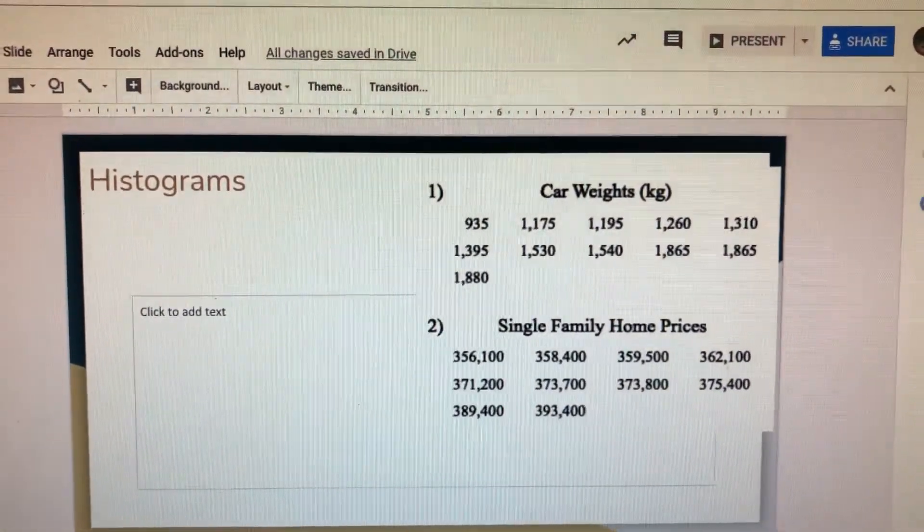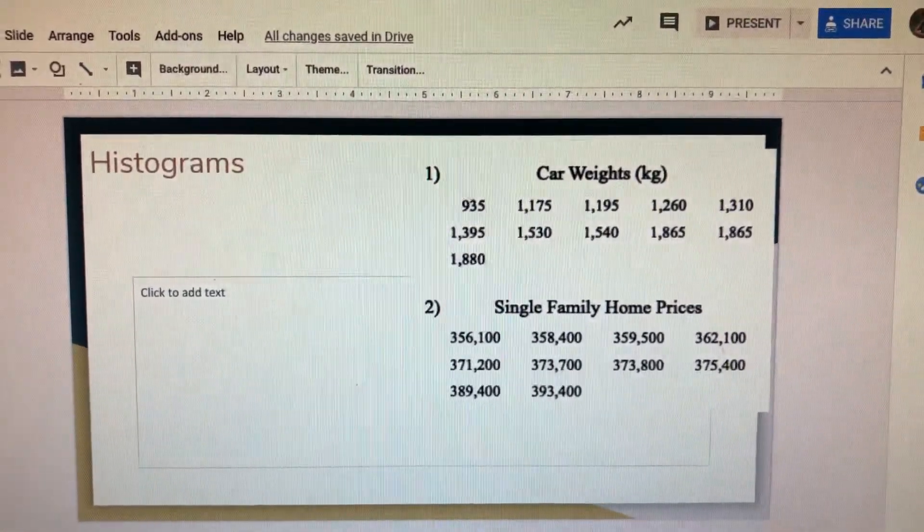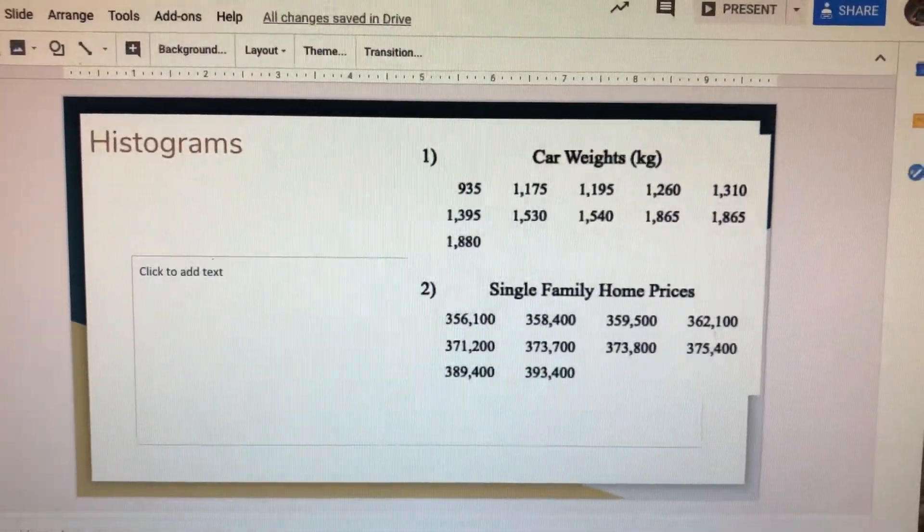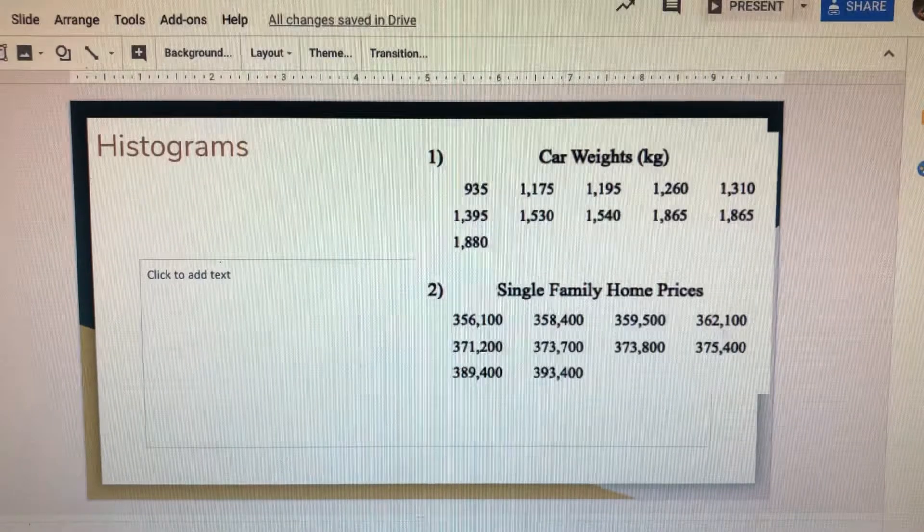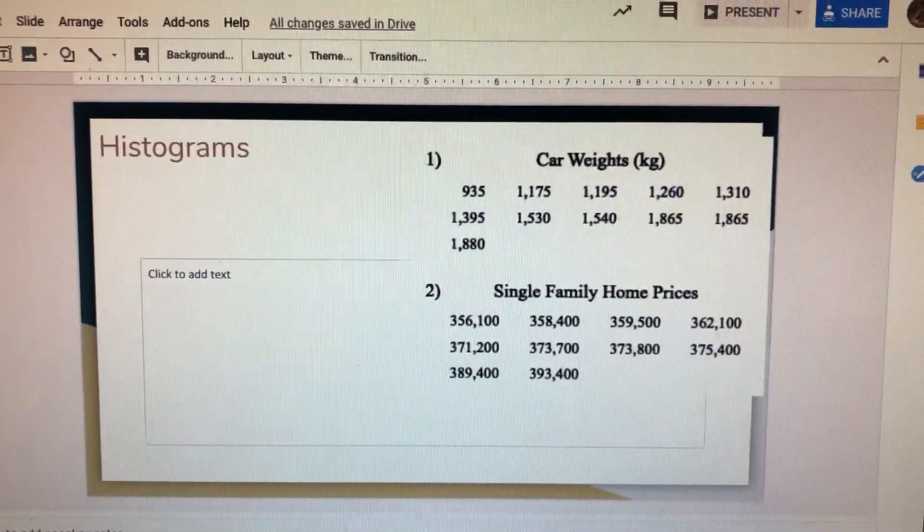Creating a histogram. We talked about this a little bit last week, but a histogram is very similar to a bar graph, but instead of every single category getting its own bar or its own little count, we sort of put them in groups.